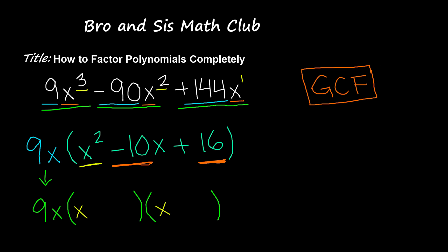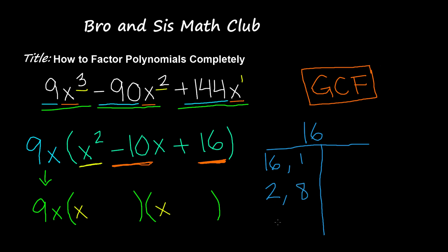Let's find the factor pairs of 16. We have 16 and 1, we have 2 and 8, and we have 4 and 4. For 16 and 1: negative 16 plus positive 1 gives negative 15; positive 16 plus negative 1 gives positive 15; negative 16 plus negative 1 gives negative 17. So we can't use the factor pair 16 and 1.